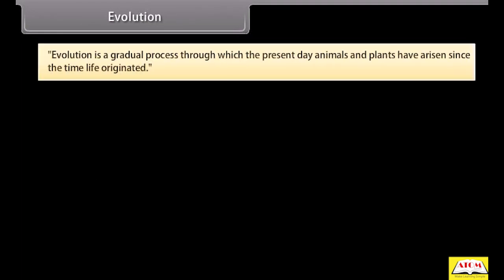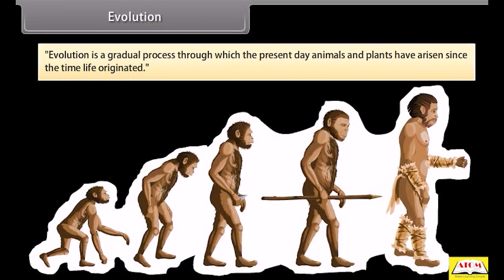Evolution is a gradual process through which the present-day animals and plants have arisen since the time life originated.